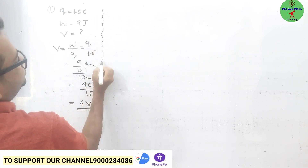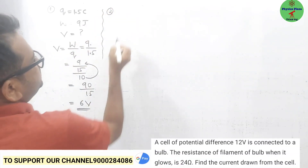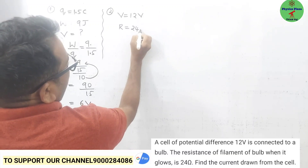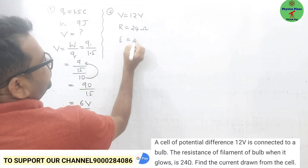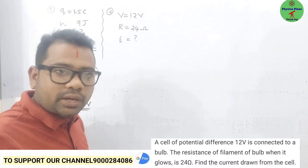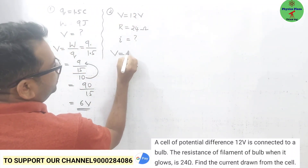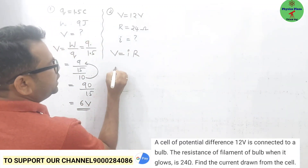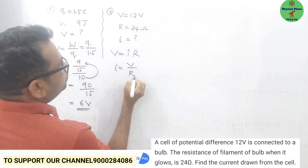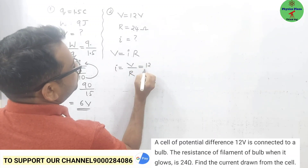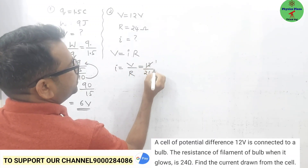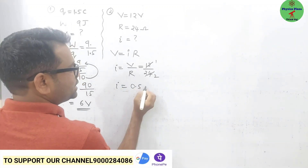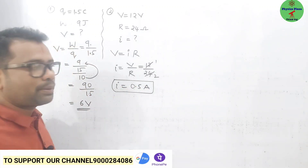Second numerical: the potential difference is 12 volt and resistance is 24 ohm. They are asking us to calculate the current. This is based on Ohm's law: V = IR. Making current the subject, I = V/R = 12 / 24 = 1/2 = 0.5 ampere.